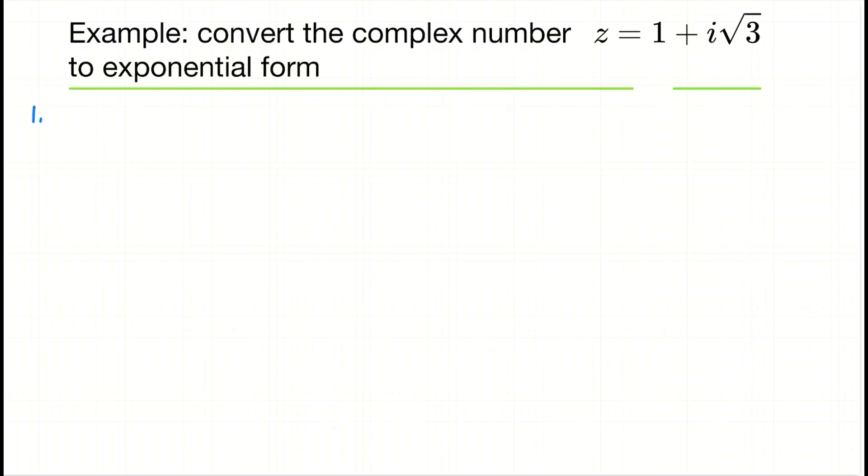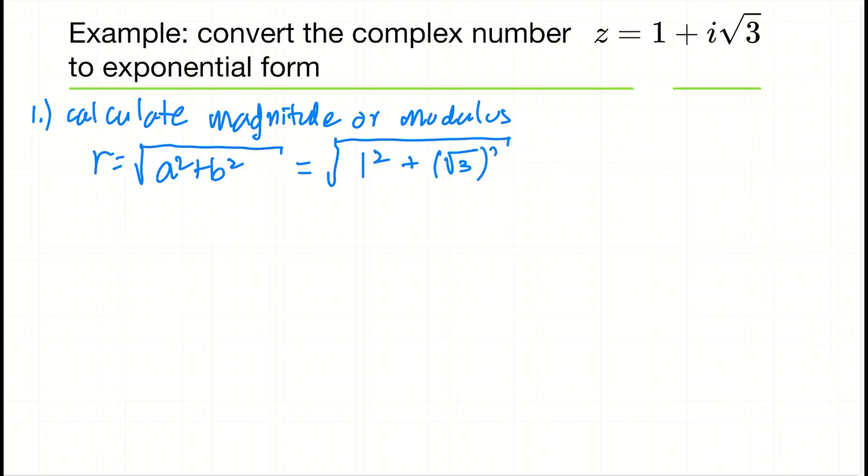Okay, the first thing we want to do is calculate the magnitude or modulus. We've seen this in previous videos—that's going to be r equals the square root of the real part squared plus the imaginary part squared. In this case, the real part is 1, so that's 1 squared, and the imaginary part is √3, so we have (√3) squared.